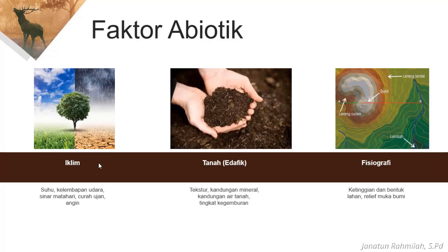Yang kedua ada tanah atau edafik. Di tanah ini ada tekstur: pasir, debu, lempung — beda-beda jenis tanahnya. Lalu ada kandungan mineral organik atau anorganik yang ada di dalam tanah, contohnya karbon, hidrogen, oksigen, nitrogen, fosfor, belerang. Ada juga kandungan air tanah, pH tanah, dan tingkat kegemburan. Kegemburan itu untuk menentukan apakah si tanaman cocok tumbuh di wilayah tersebut.